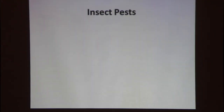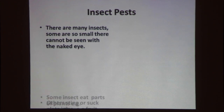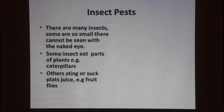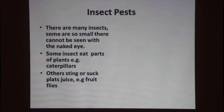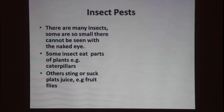We start with insect pests. There are many insects. Some are so small you cannot see them with the naked eye. Some insects eat part of the plants, like the caterpillars. Other insects sting or suck the plant's juice out of the fruit, like fruit flies and whiteflies.